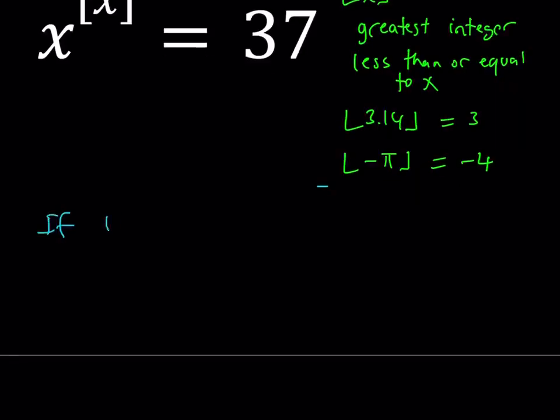If x is between 0 and 1, then if you have a number that is between 0 and 1, that means its floor value is going to be 0. So, we have x to the power 0 equals 37. Obviously, 1 does not equal 37. So, we don't get any solutions from this interval.